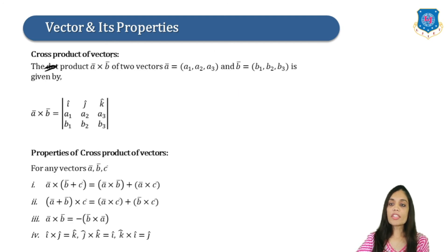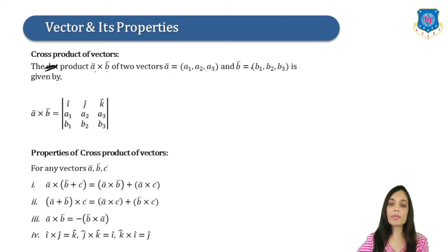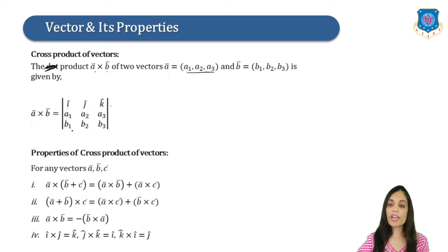Now we will study the cross product of vectors. The cross product A bar × B bar for vectors A bar = (A1, A2, A3) and B bar = (B1, B2, B3) is given by expanding the determinant with rows [î, ĵ, k̂], [A1, A2, A3], and [B1, B2, B3]. You have to solve this determinant to find the cross product.